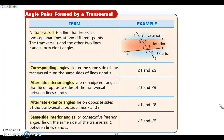The next concept is transversals. Anytime you have one line intersecting two other lines, that can be considered a transversal. Corresponding angles happen when two lines are intersected by a transversal, and the angles are in the exact same location.